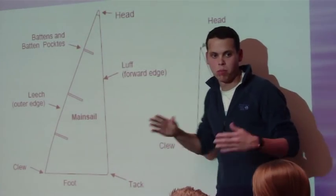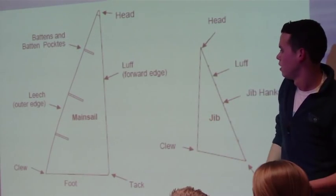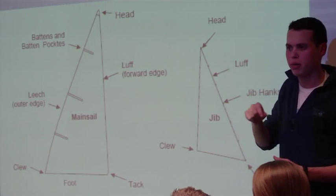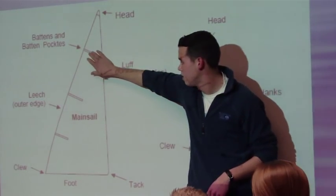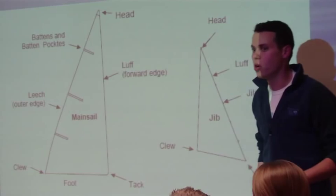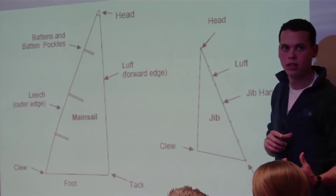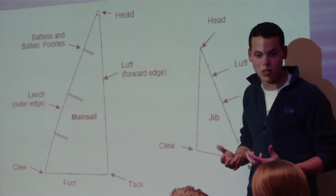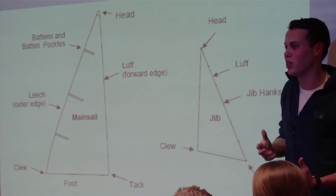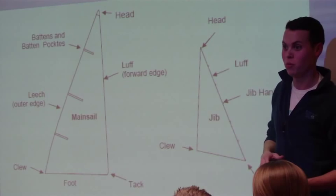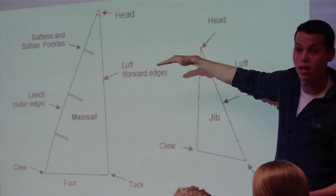You'll have three to four battens, and they'll run pretty much equal length. They'll be made out of a hard fiberglass that'll fit in what are called batten pockets, here and here. And so what they do is they help maintain sail shape on the aft portion of our sail.